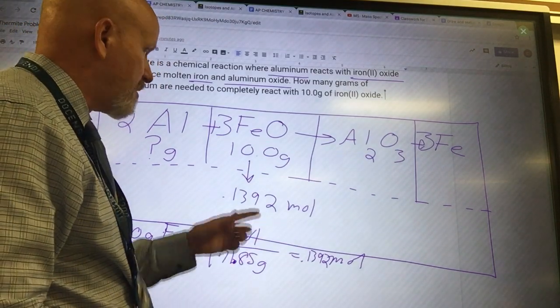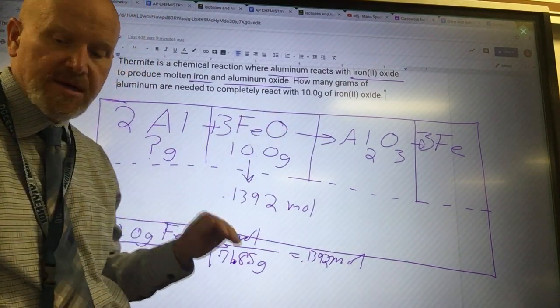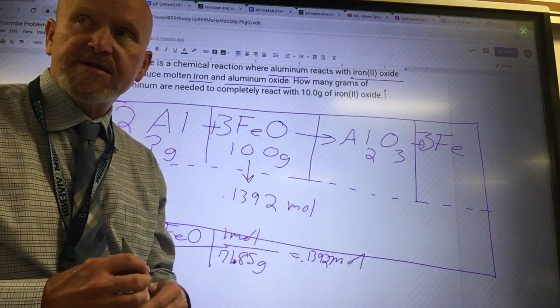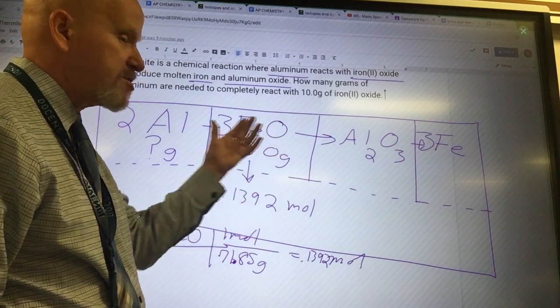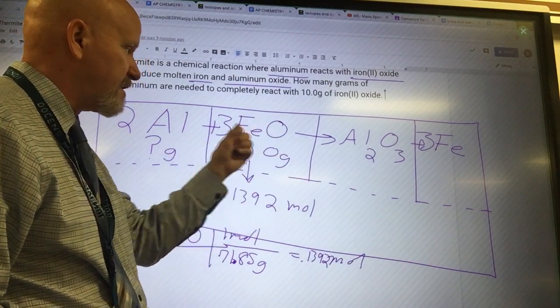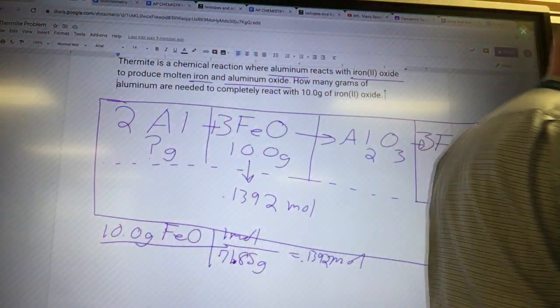So what I'm going to have to do with this number is I'm going to have to take and multiply this by the ratio of iron oxides to aluminums. You need to do this step. On the AP exam, they've got to see that you multiplied by the proper ratio between the thing that was given and the thing that was asked for on this.